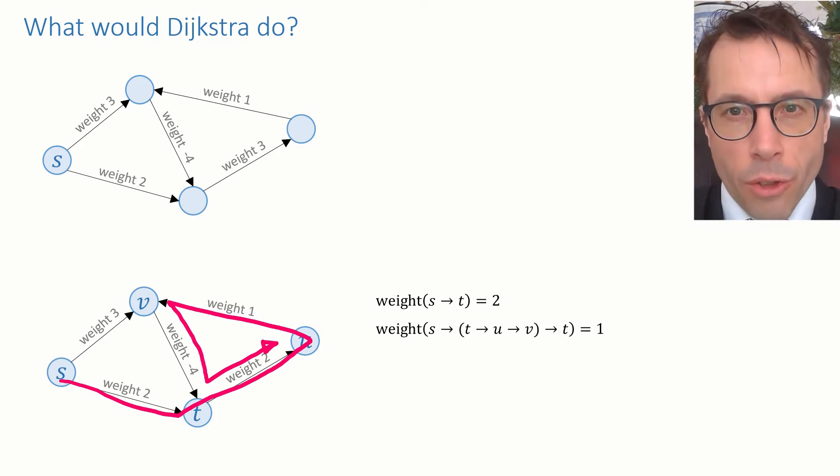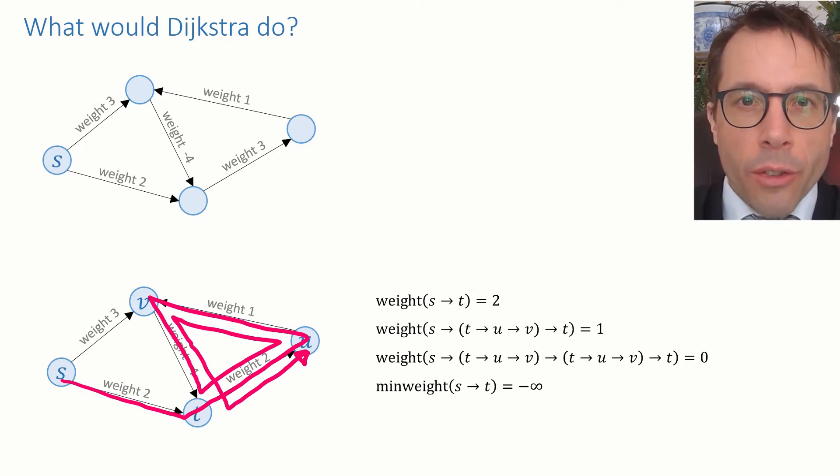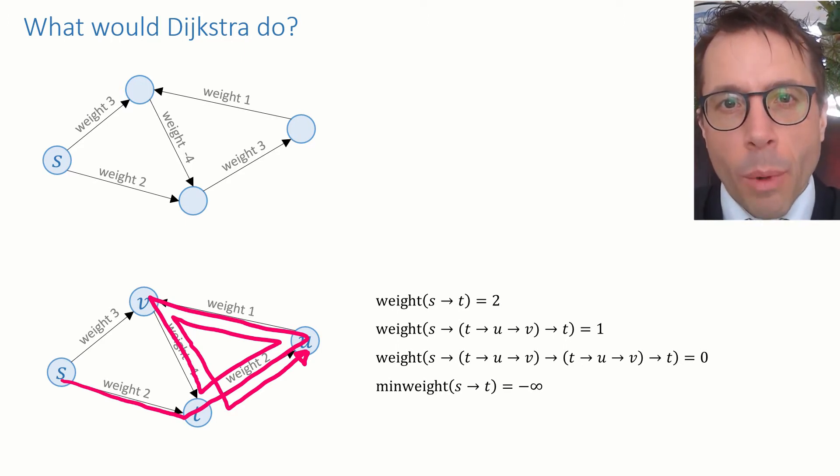Or we could go around the cycle twice. That would give us a path of weight 0. Basically, by going around the cycle enough times, we can find a path of arbitrarily low weight. As a sensible convention, we'll say that the minimum weight from s to t is equal to minus infinity.